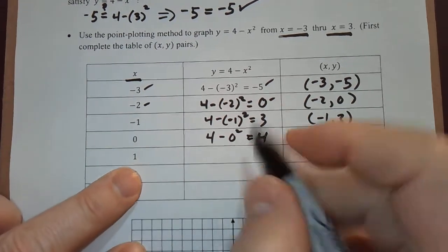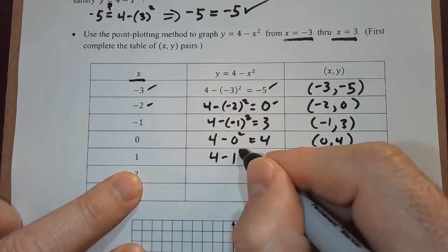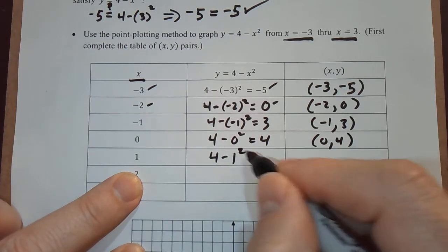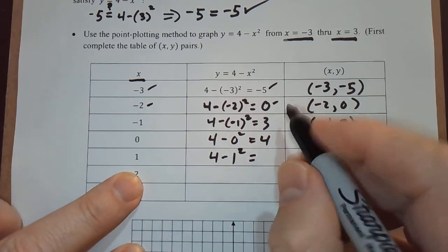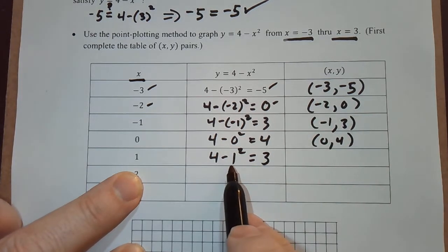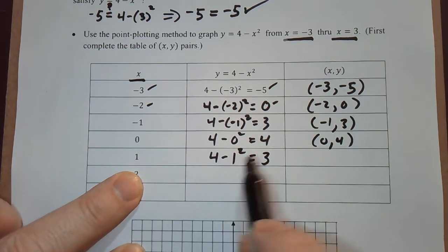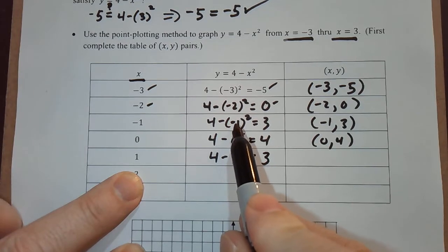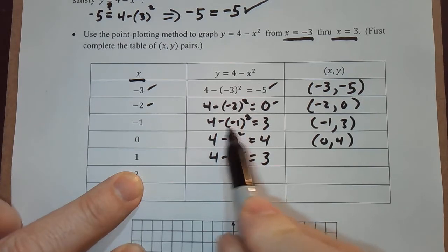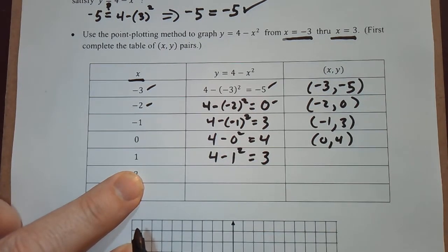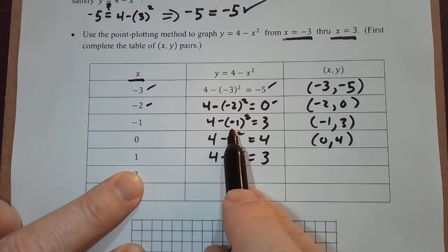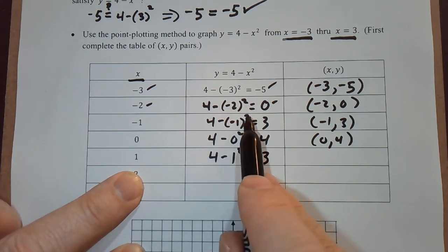Now 1, we get 4 minus 1 squared. 1 squared is 1, 4 minus 1 is 3. I didn't put the 1 in parentheses, I just wrote 1 squared because when you have negative 1, it's very important that you put the parentheses. It's not negative 1 squared, up here it is negative 1 squared.